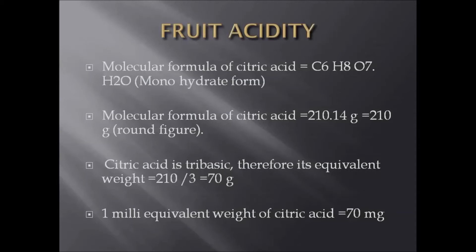One thing I want to say: the molecular formula of citric acid is C6H8O7·H2O — this is the monohydrate form of citric acid. The molecular weight of citric acid equals 210.14 g, or in round figure, 210 g. But citric acid is tribasic; therefore, its equivalent weight is 210 divided by 3, that is equal to 70 g. So we are multiplying milliequivalents with 70 in order to get milligrams. So one milliequivalent weight of citric acid is equal to 70 mg. This is how the 70 mg came for each milliequivalent of acid — we calculated based on the molecular formula of citric acid and its equivalent weight. This is the reason one milliequivalent weight of citric acid is equal to 70 mg.